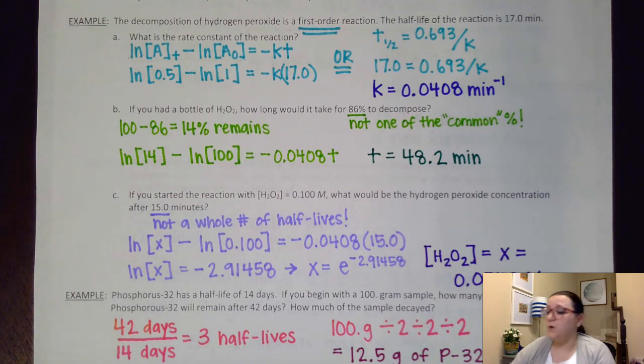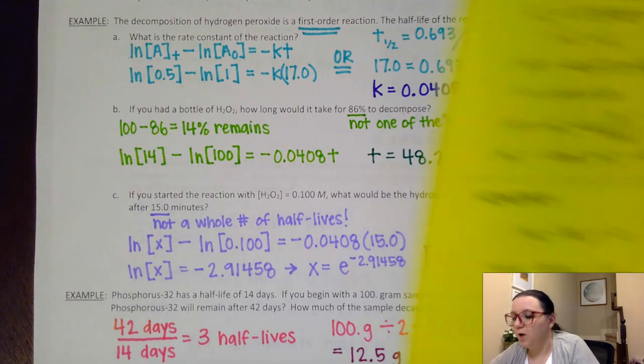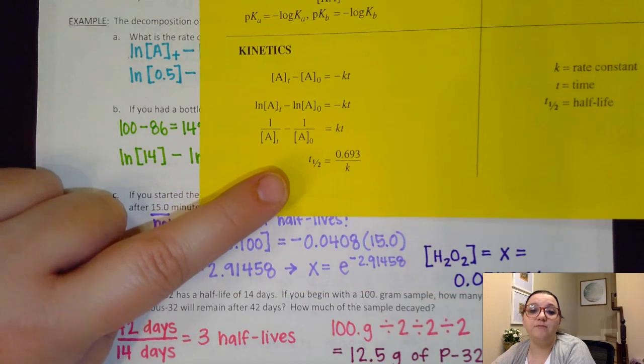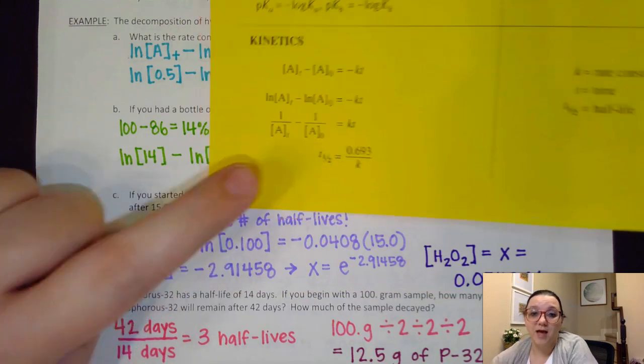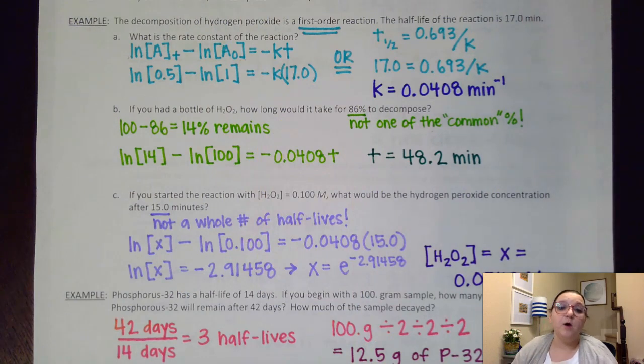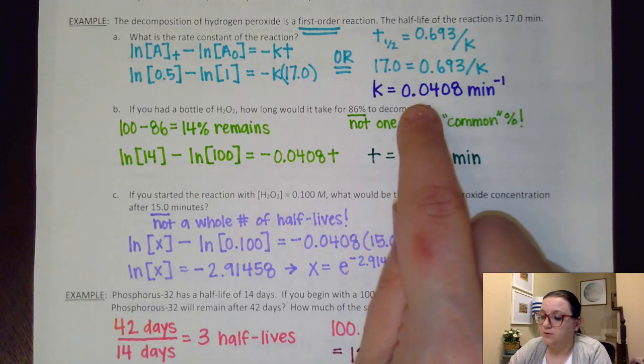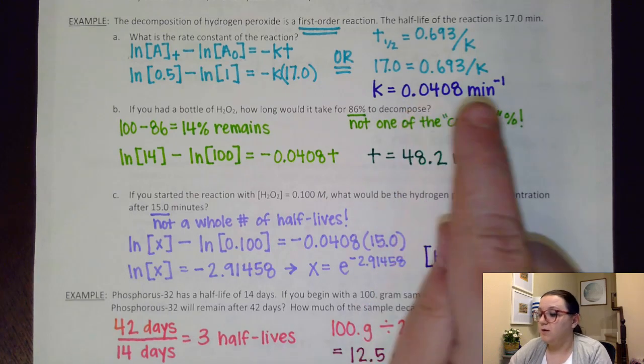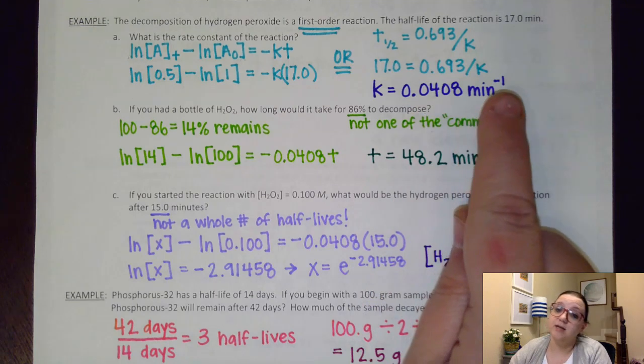However, since it was first order, you will also have the option of using T₁/₂ equals 0.693 over K. And so you could very easily solve it with that method as well. Really, it's kind of a take your pick there. You could do it either way.